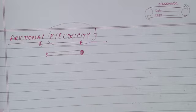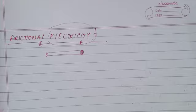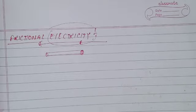The rubbed substance which stores this property of attraction is said to have become electrified — or, in other words, the substance which is being rubbed and shows this property of attraction is said to be electrically charged.